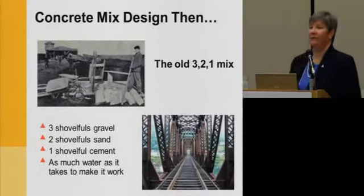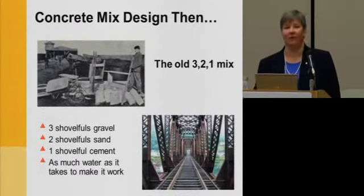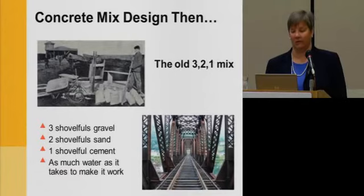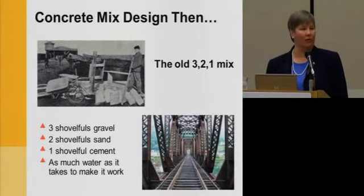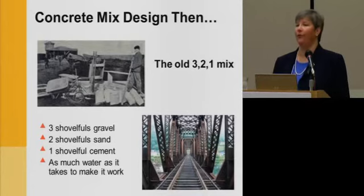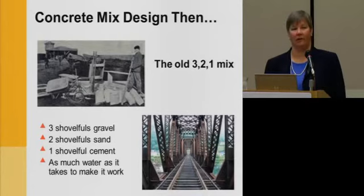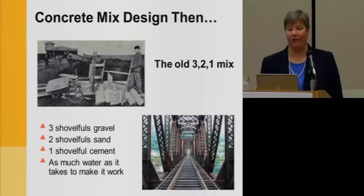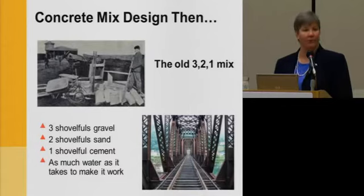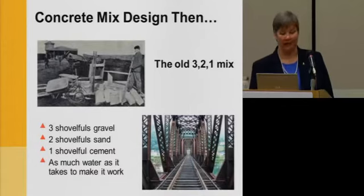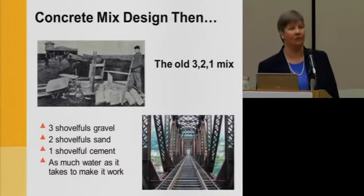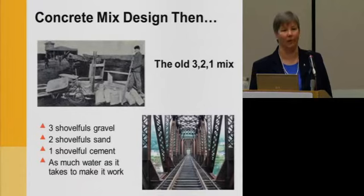Back at the beginning, the initial concrete designs — and you see this on old rail bridge plans that are still in existence — they would call it the 3-2-1 mix. It was as simple as that: three shovelfuls of gravel, two shovelfuls of sand, one shovelful of cement, and however much water it took to make it work.